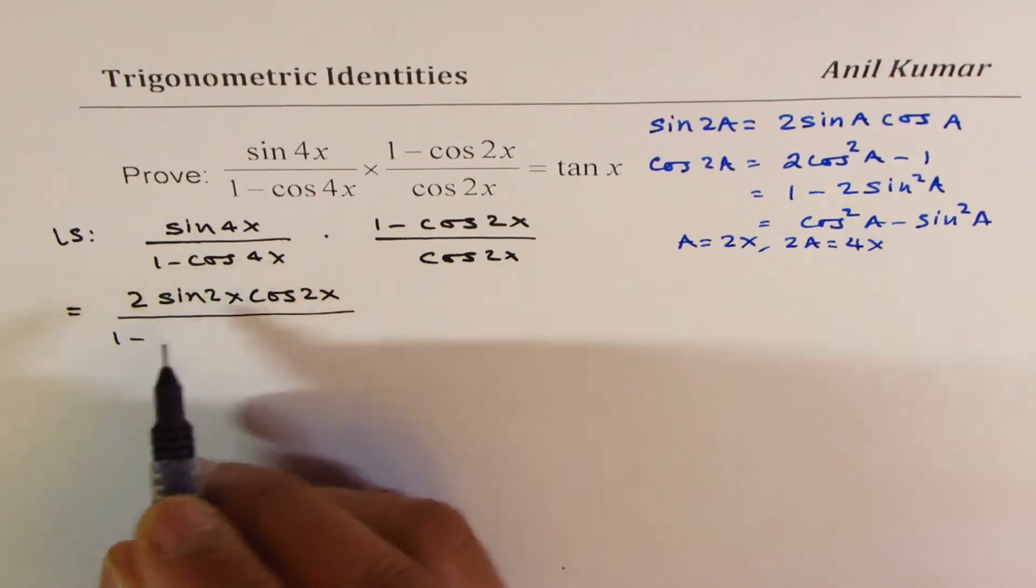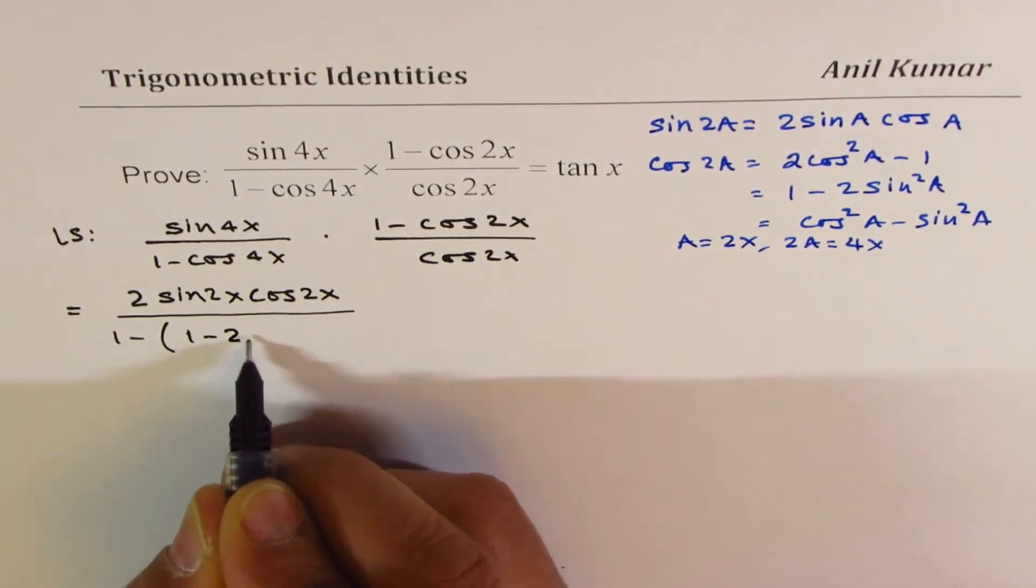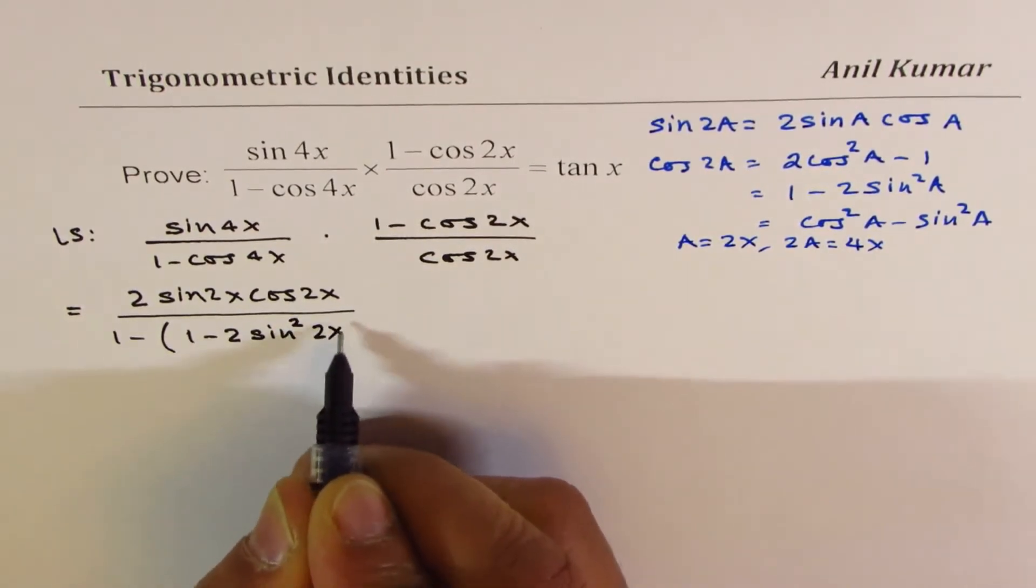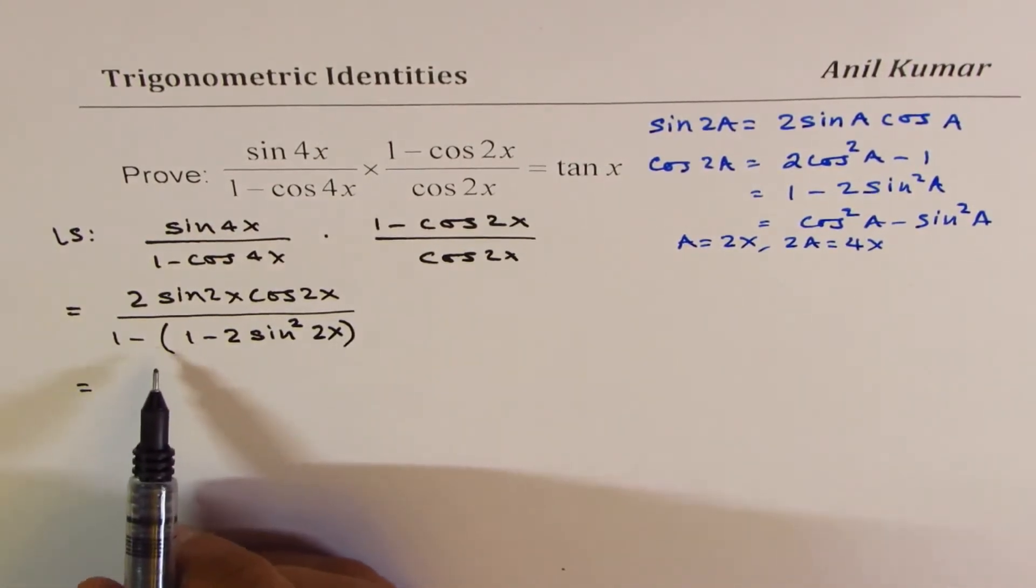So cos 4x, I'll write this as 1 minus 2 sine square 2x. You get an idea, right? So basically, I'm going to cancel 1 minus this term.